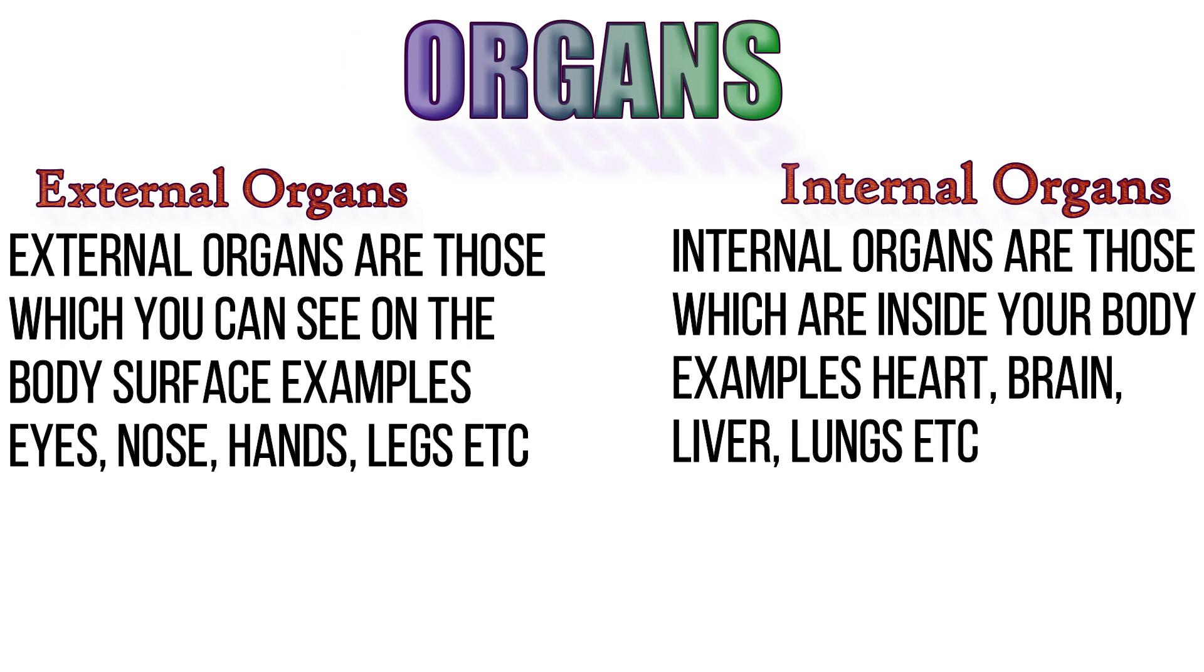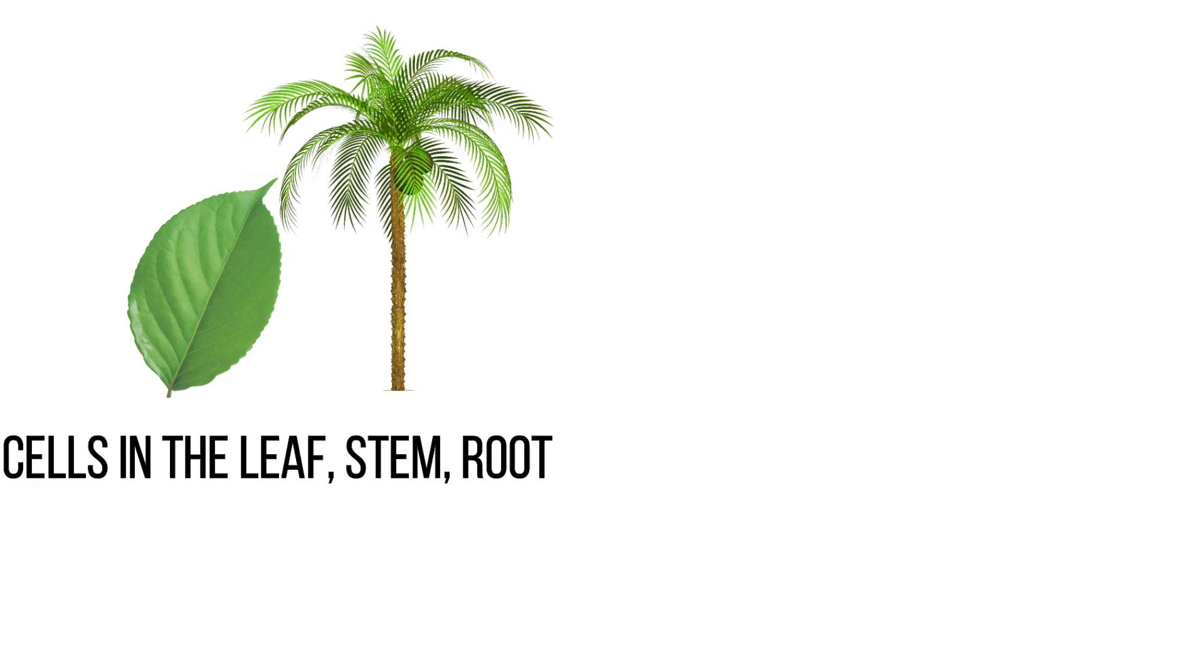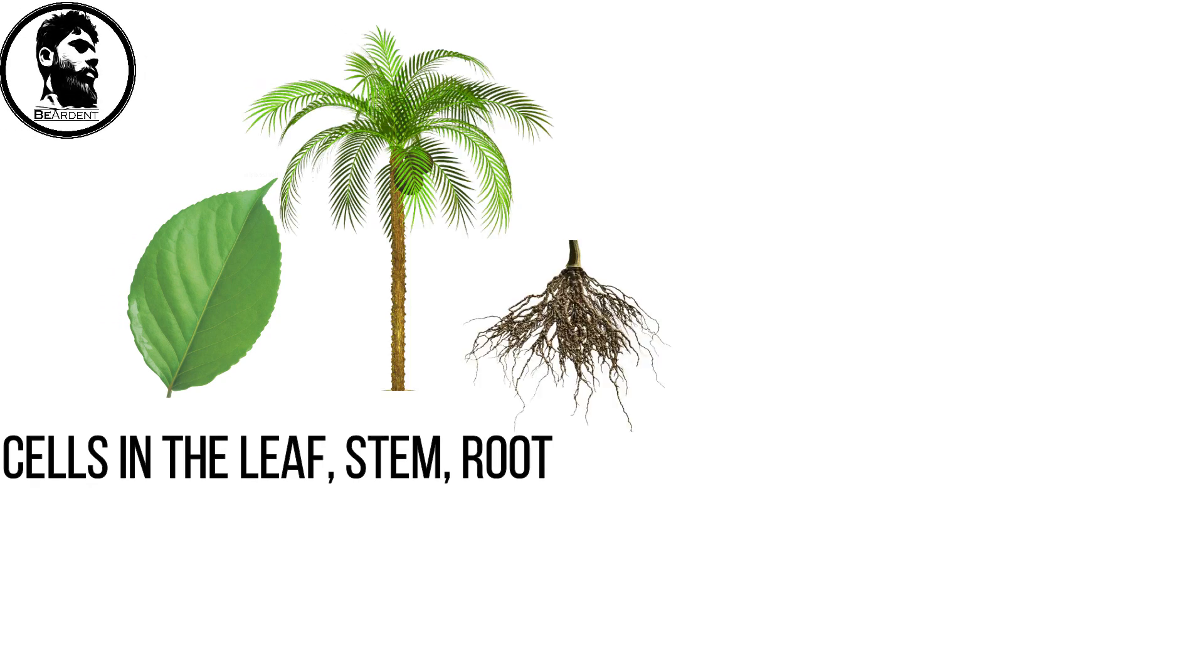An example of these internal organs are? Can you guess? Yes, these organs are heart, brain, liver, lungs, etc. Like in animal plants also have their cells in the leaf, stem and roots. And each leaf, stem and root is an organ of a plant.